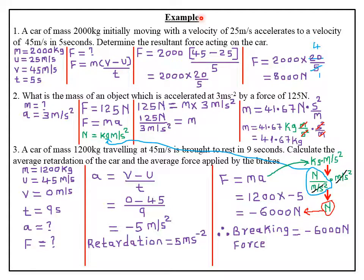Today we are looking at examples that involve the formulas that we derived from our previous class. The first question reads that a car of mass 2,000 kg, initially moving with a velocity of 25 meters per second, accelerates to a velocity of 45 meters per second in 5 seconds. We are required to determine the resultant force acting on the car.